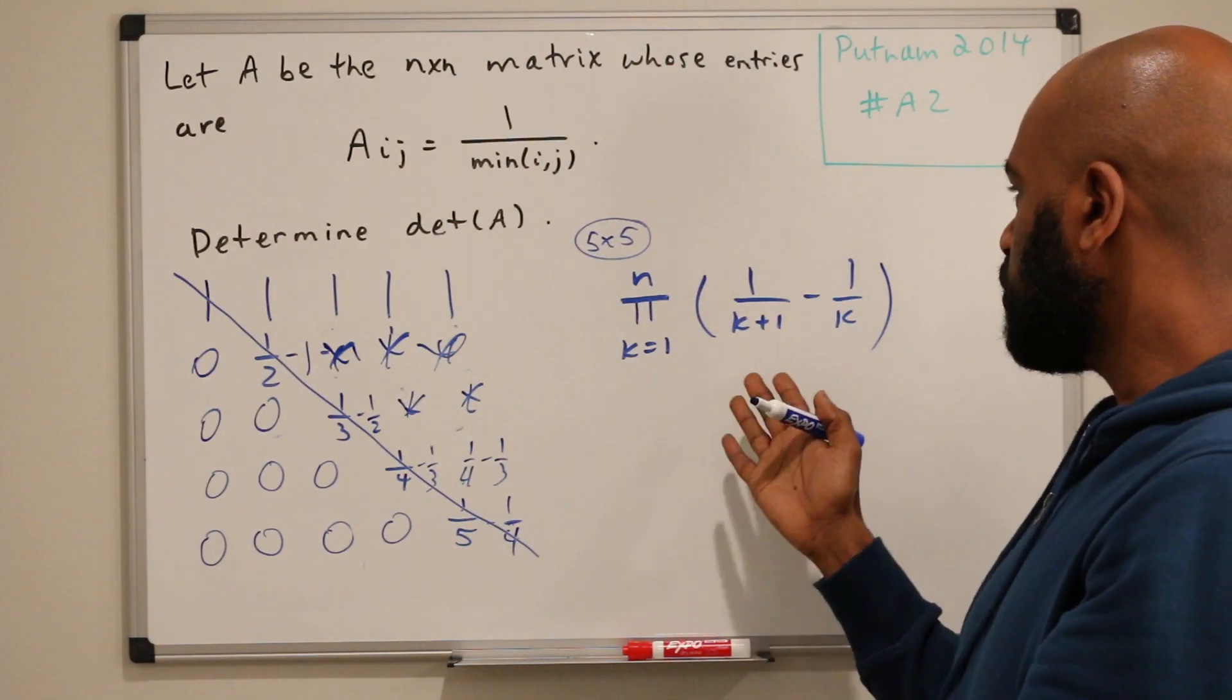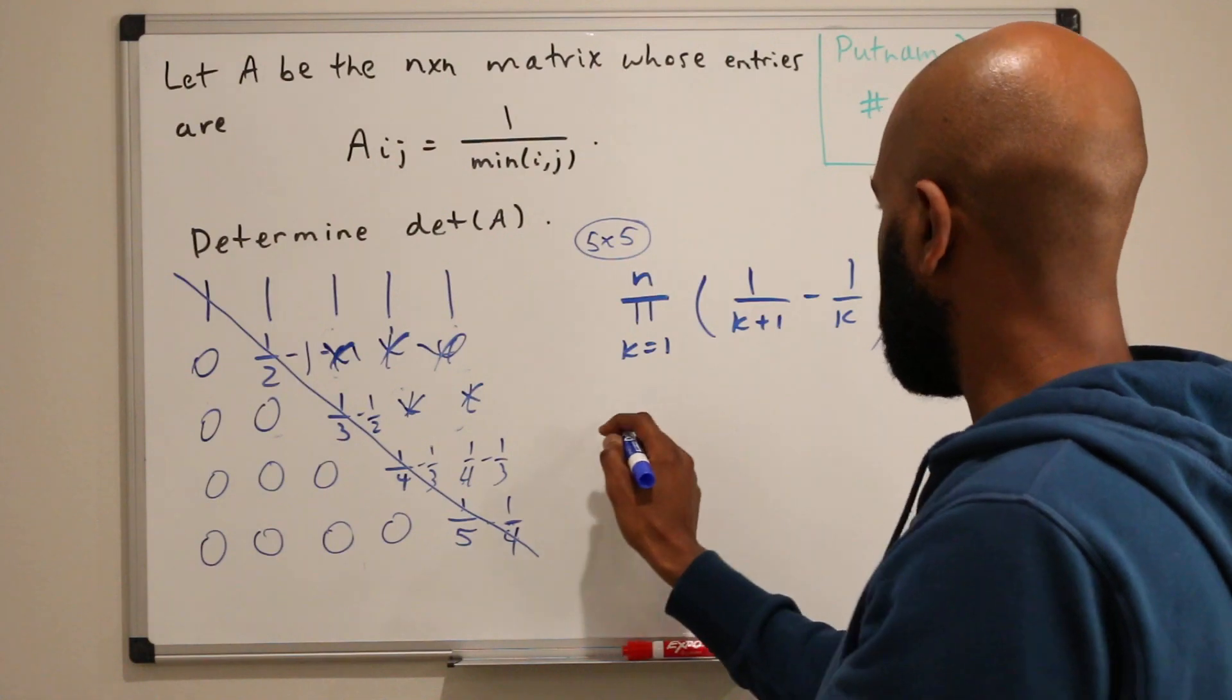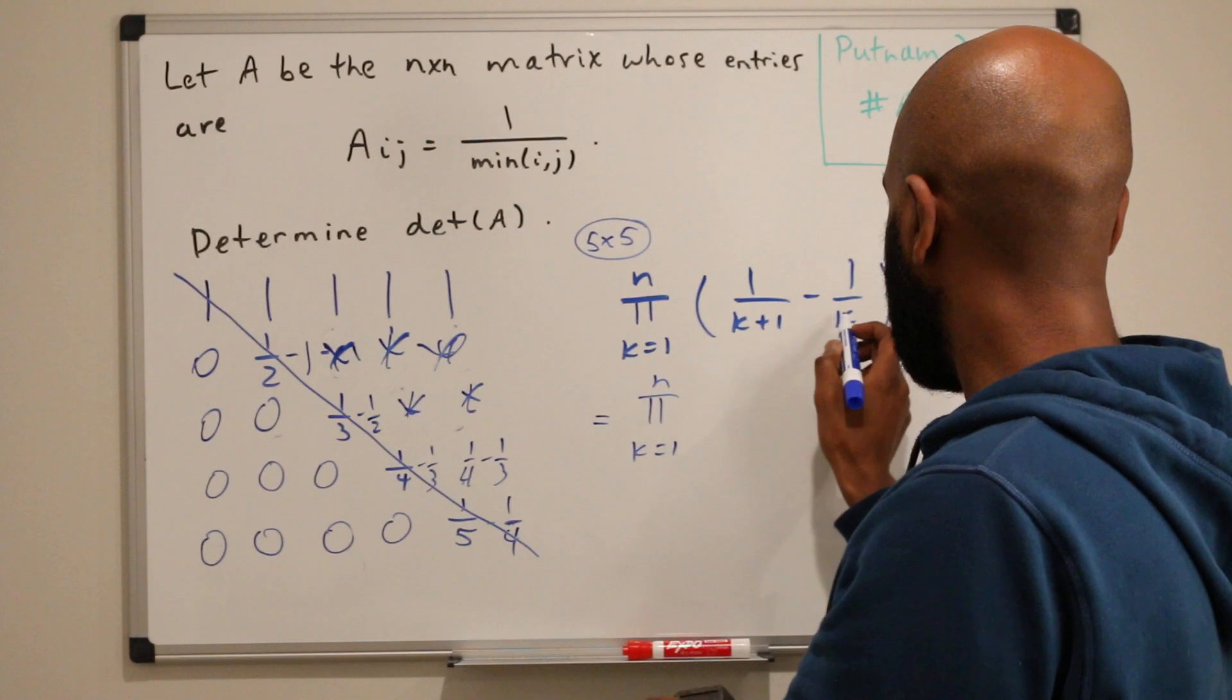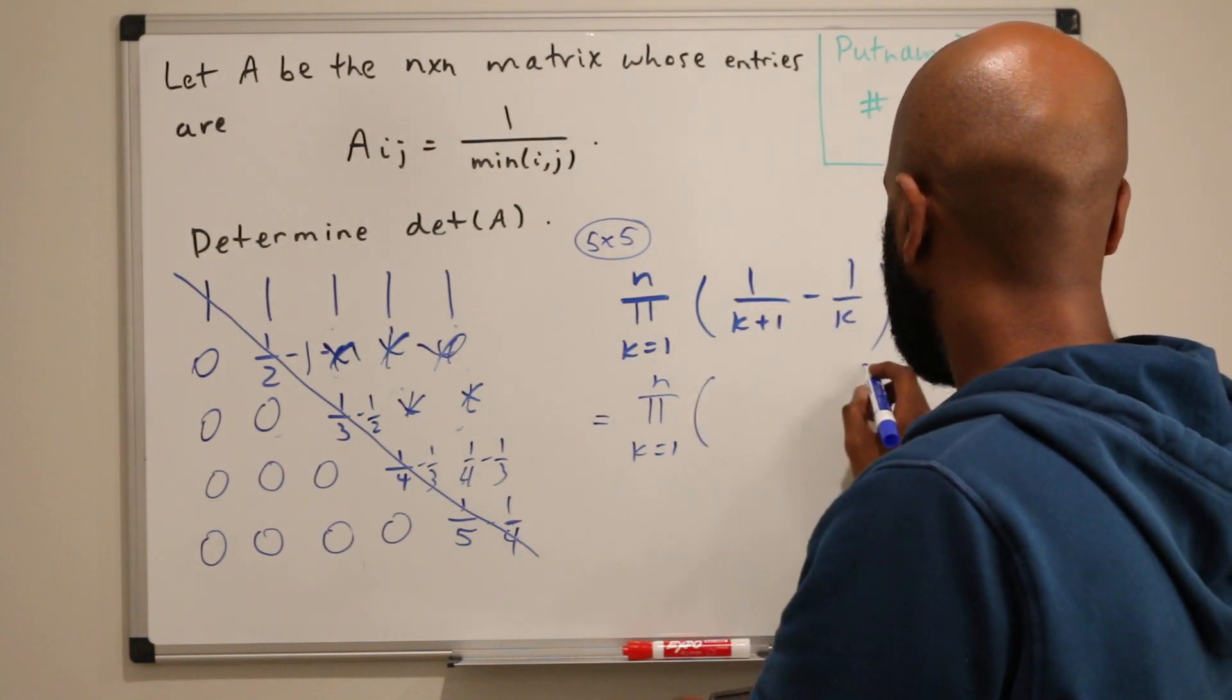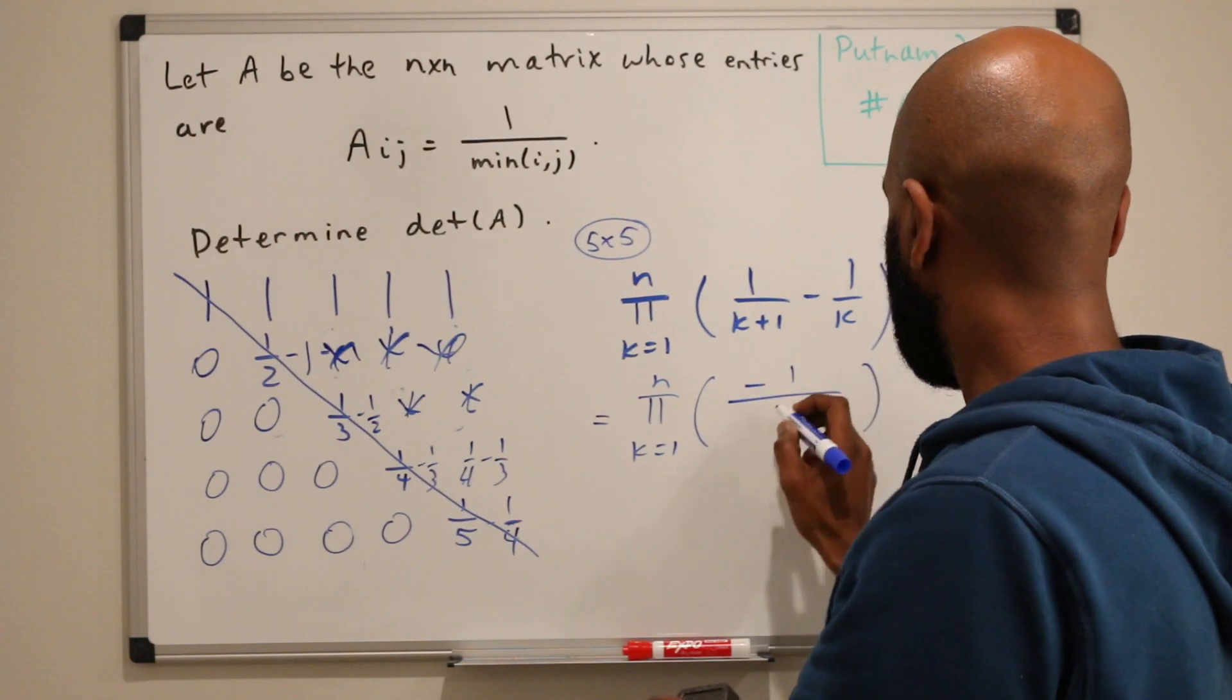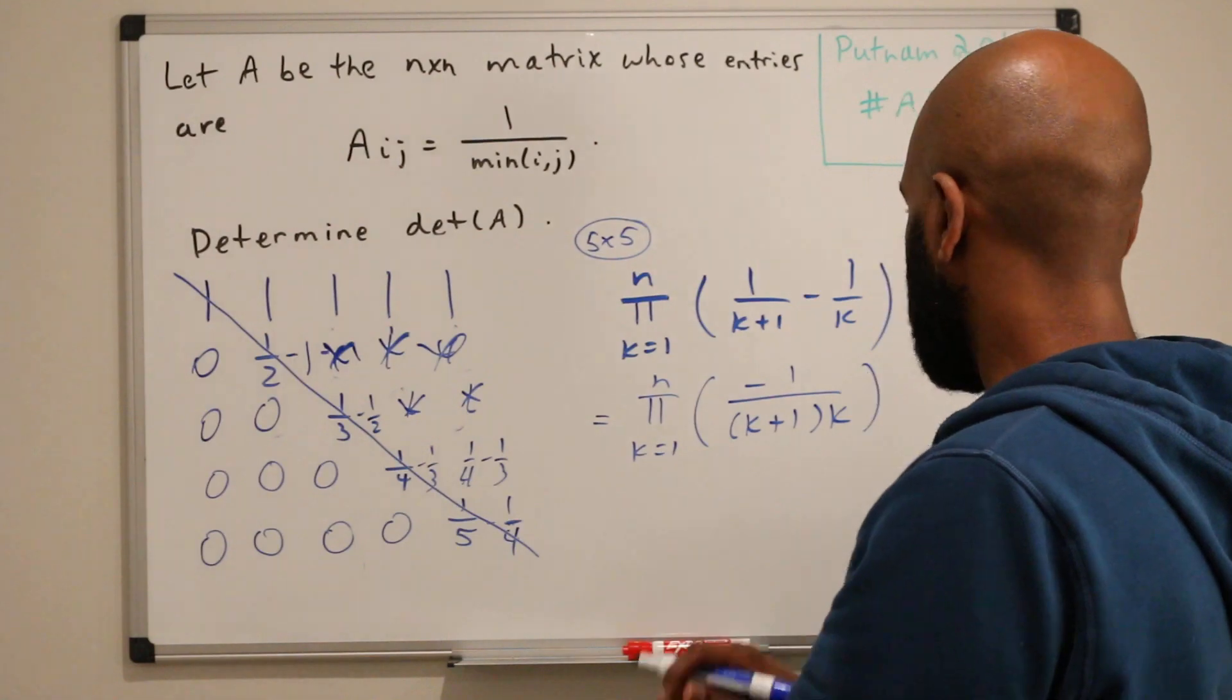We can simplify this if you wanted to using factorials or such. Let's actually do that so maybe we have a nice cleaner expression. Maybe the product k equals 1 to n. This thing here is negative 1 over the quantity k plus 1 times k.